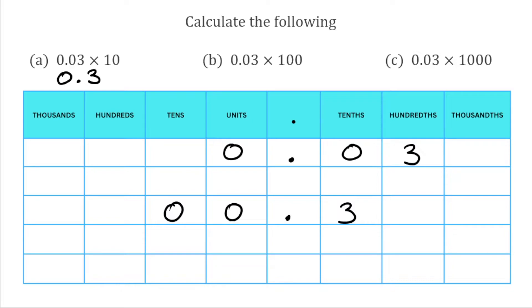When we multiply 0.03 by 100, we're going to move all the digits two places to the left. That 0 in the units is now in the hundreds, that 0 in the tenths is now in the tens, and that 3 in the hundredths is now in the units. We've reached the decimal point so we can stop there. So 0.03 multiplied by 100 is just 3.